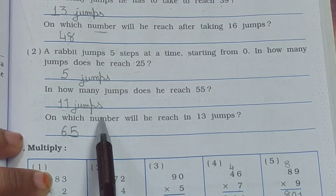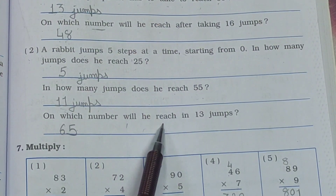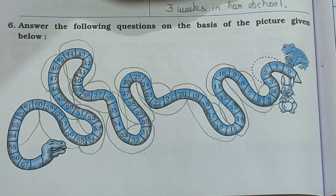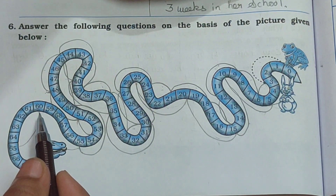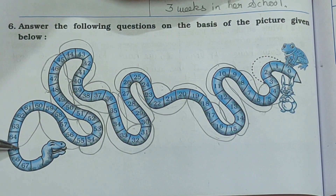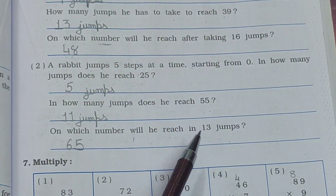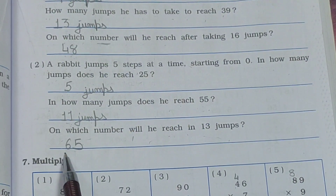The last question: on which number will the rabbit reach in 13 jumps? We know 55 takes 11 jumps. So from 55 to 60 is the 12th jump, and 60 to 65 is the 13th jump. So in 13 jumps, the rabbit reaches number 65. Your answer is 65.